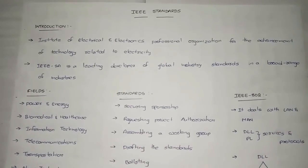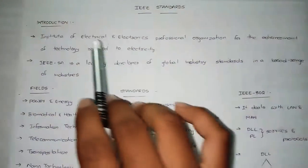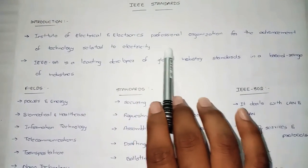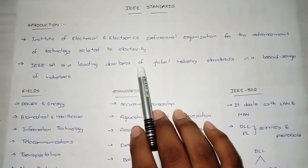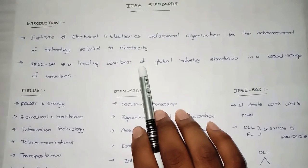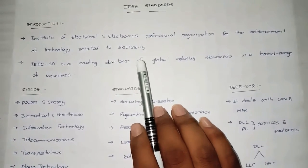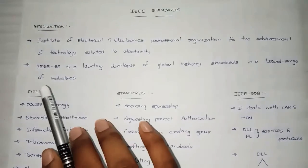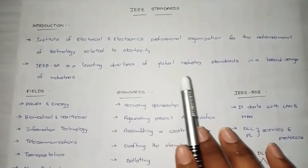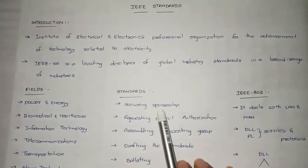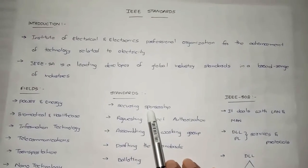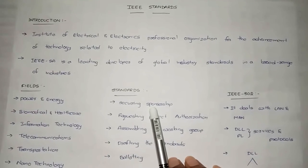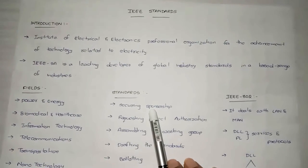IEEE stands for Institute of Electrical and Electronics Engineers. It is a professional organization for the advancement of technology related to electricity. IEEE SA is a leading developer of global industry standards in a broad range of industries. It is a worldwide organization run by electrical and electronics engineers.